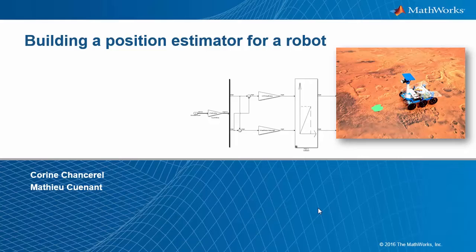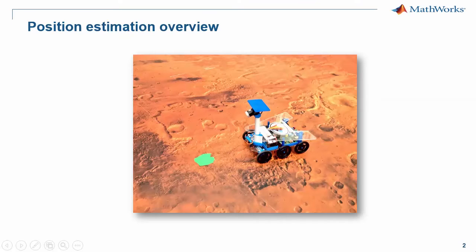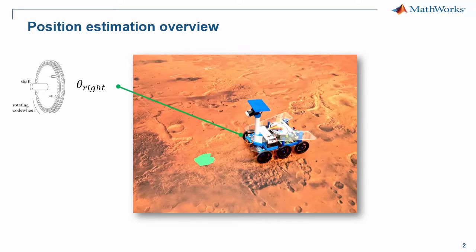Let's take a look at a concrete example. The Mars Rover robot has two actuated wheels both equipped with position sensors, also known as encoders, one on the right and one on the left.